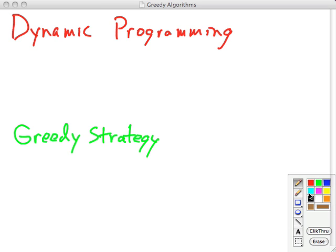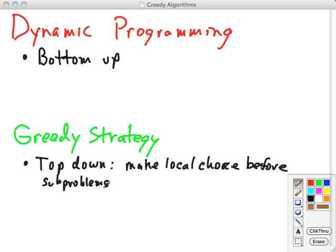But they differ in some key respects. First of all, dynamic programming works bottom-up and solves the sub-problems first. Whereas the greedy strategy is top-down, and that's because it makes a local choice before solving the sub-problem that creates.